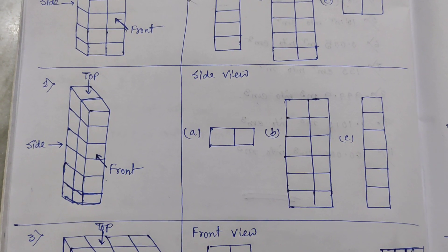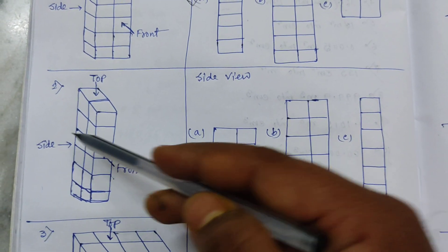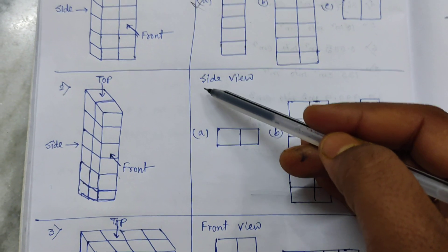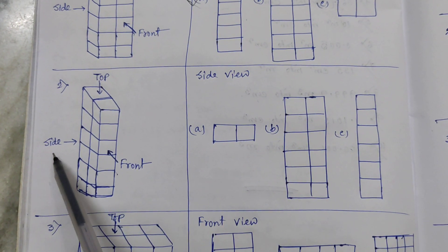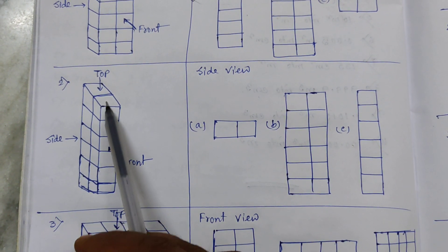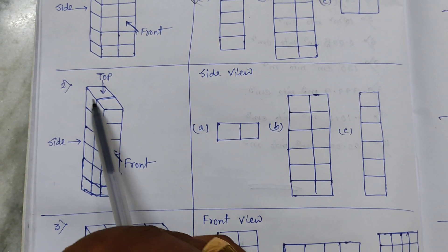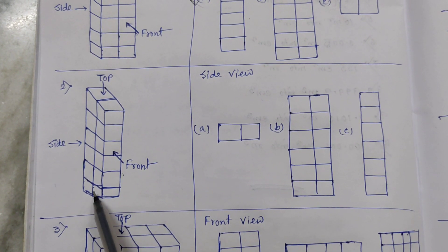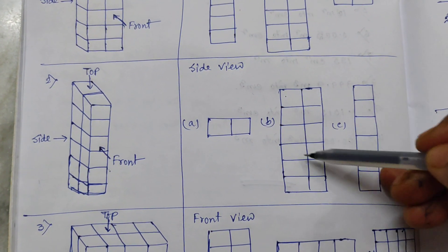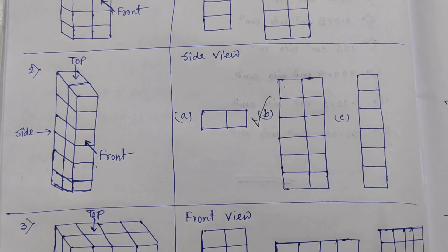Now number two — another object is shown with its top view, side view, and front view. We have to find the side view. If I look from this side, we can see this part — that is six rows and two columns. So among the three options, Option B is the correct one.